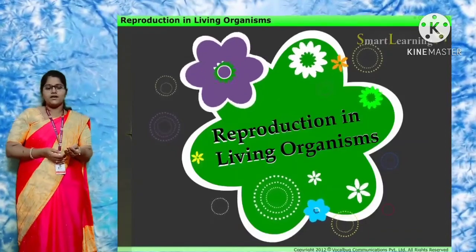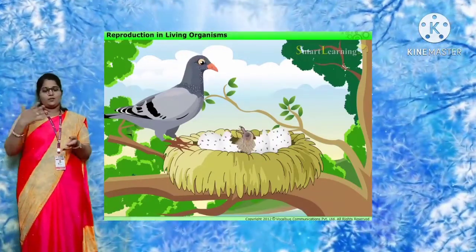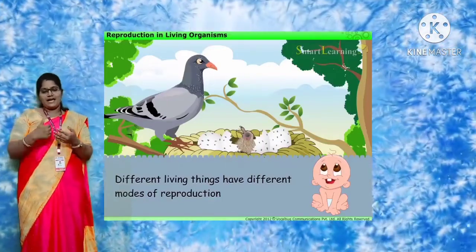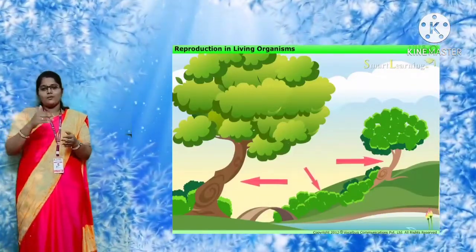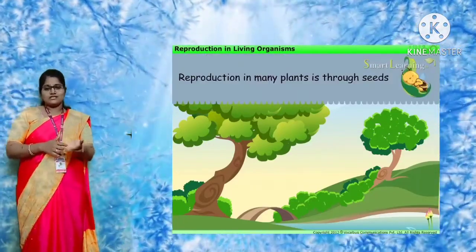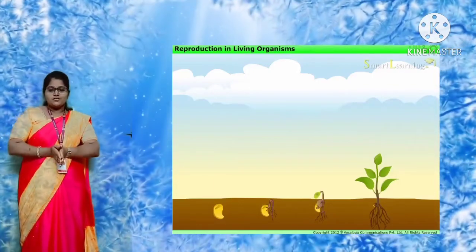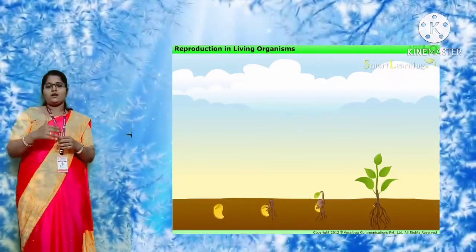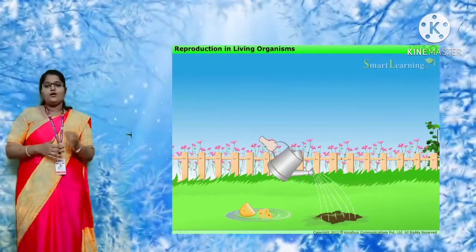Do all living things reproduce of their own kind? A bird will lay eggs and a young bird will come out. A dog will leave a puppy as its young one. Plants also reproduce — the reproduction process of plants takes place through germination, where seeds germinate and turn into a new plant. Reproduction is necessary for all living organisms to produce young ones of their own kind.